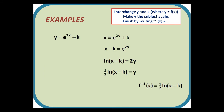Our second example involves exponentials and logarithms. So y = e^(2x) + k. Interchanging the x's and y's gives x = e^(2y) + k. We take away k from both sides, then take logs, so 2y = ln(x − k), and then divide by 2, giving a final answer of f⁻¹(x) = ½ ln(x − k).